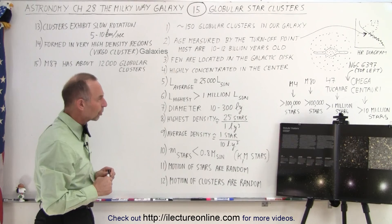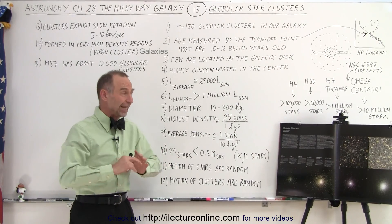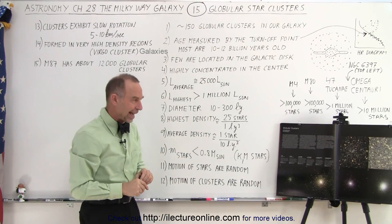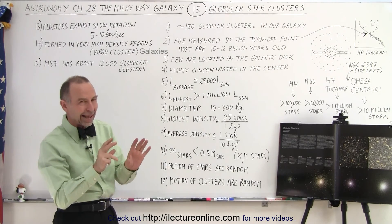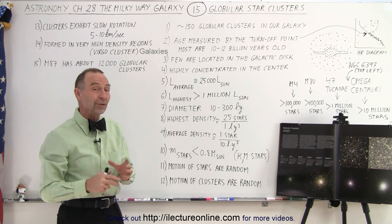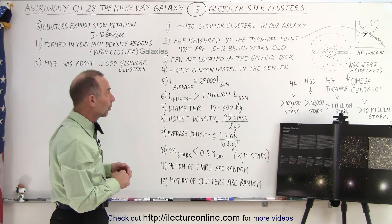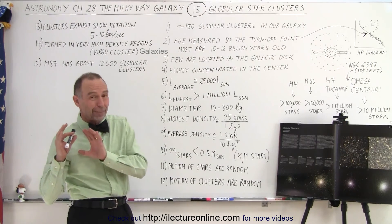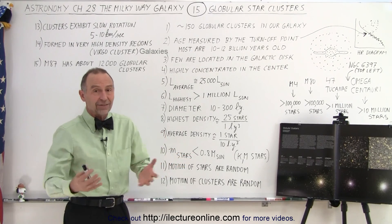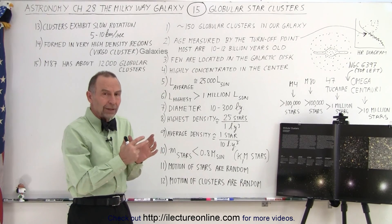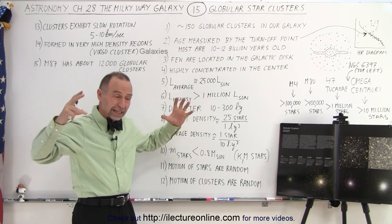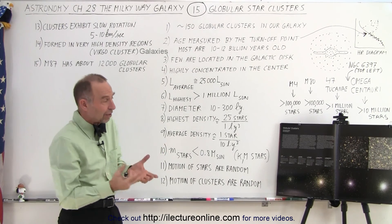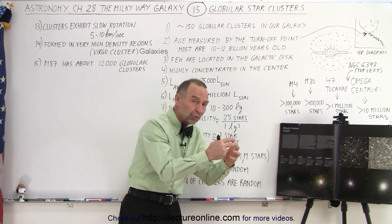There are about 150 globular clusters in our galaxy — we say about because we can't see them all. Some are simply hidden behind large quantities of dust and gas, and we just can't access some parts of our galaxy. But based on the ones we can see, we estimate about 150, with some estimates as high as 200. The age of them are all roughly between 10 and 12 billion years old, which goes way back to the beginning of the formation of the galaxy. Some are only maybe a billion years older than the galaxy itself. Because of that, we know those formed in the very beginning when the galaxy was smaller and everything was much more dense, and globular clusters have to form in very dense regions.